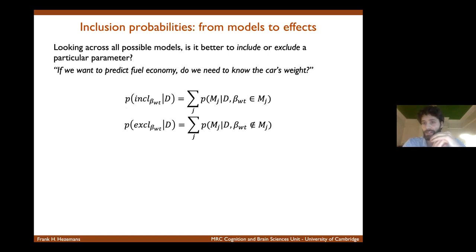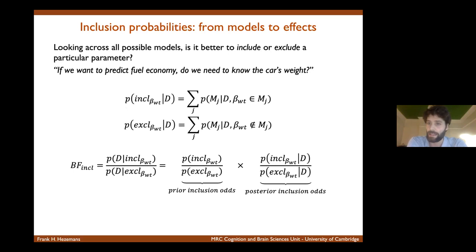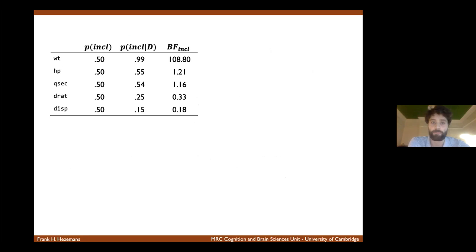And conversely, you can do the same for the family of models that excludes this predictor. And then you can determine something called the inclusion Bayes factor, which tells you how much more likely is the data among the family of models that includes this predictor relative to the family of models that excludes this predictor. And just to show you quickly what that would look like.